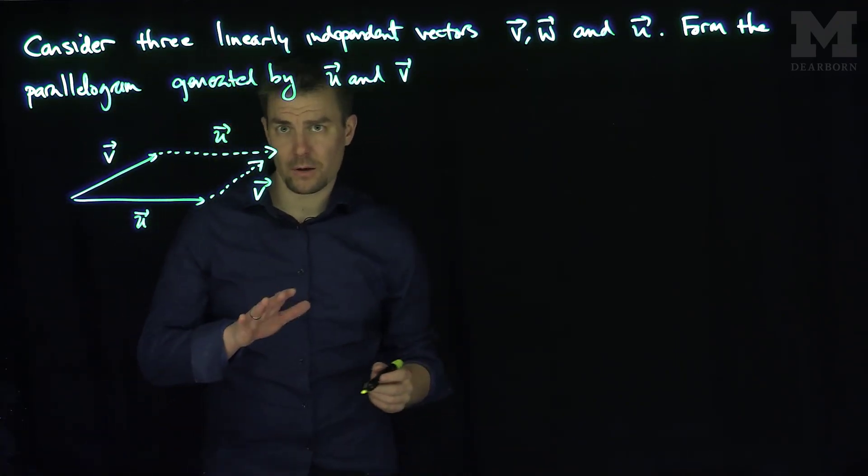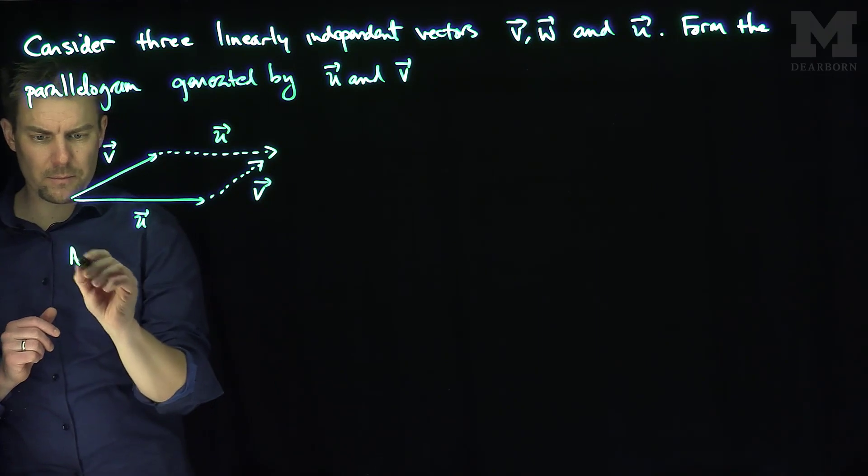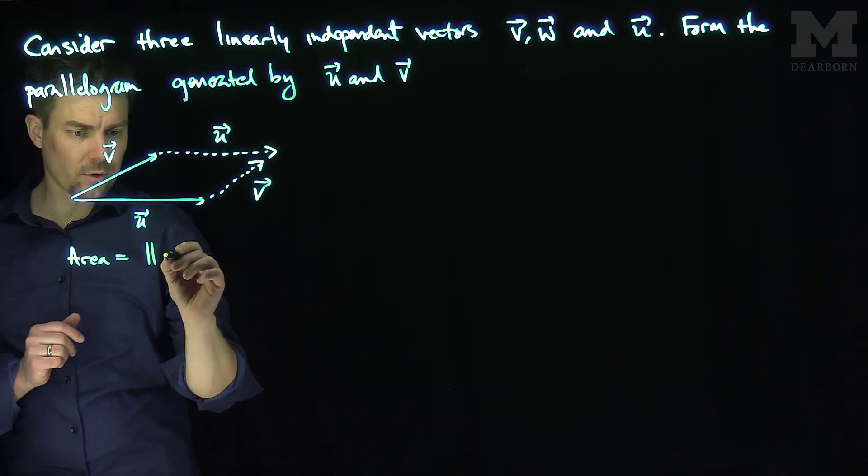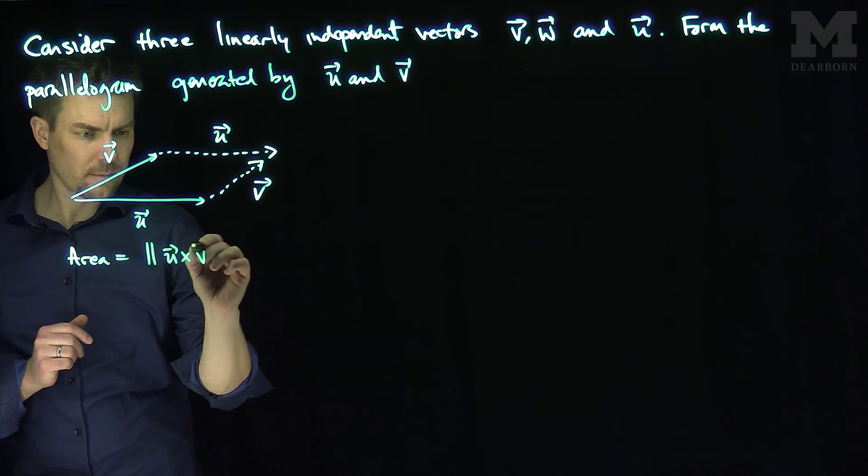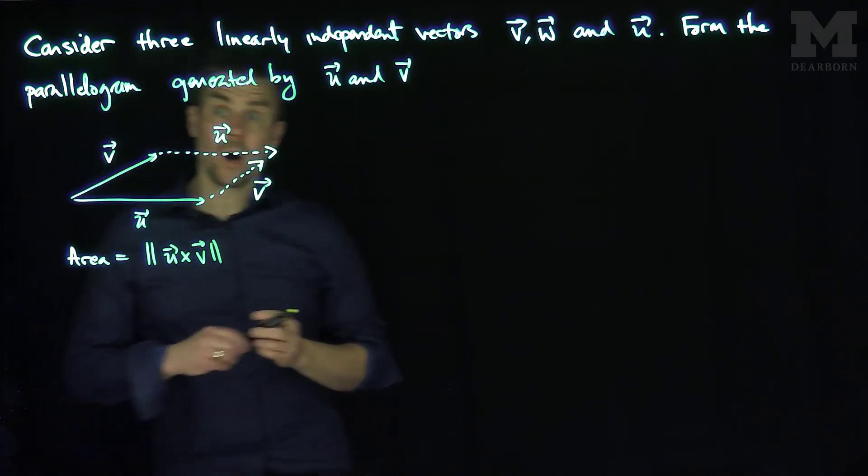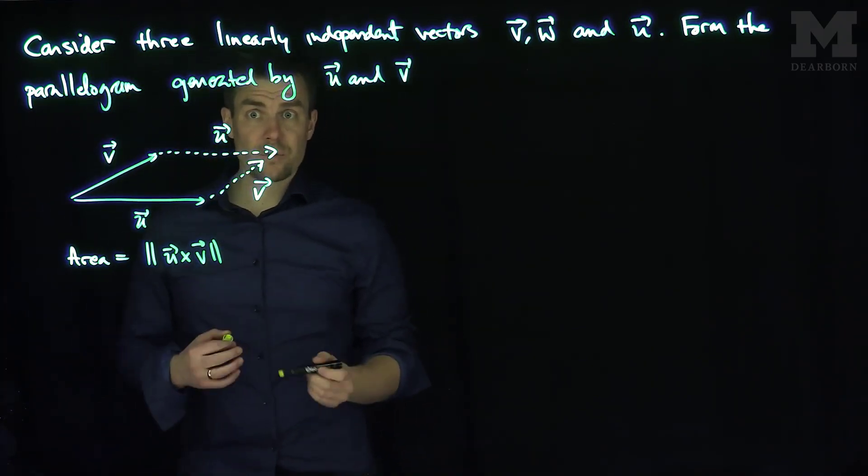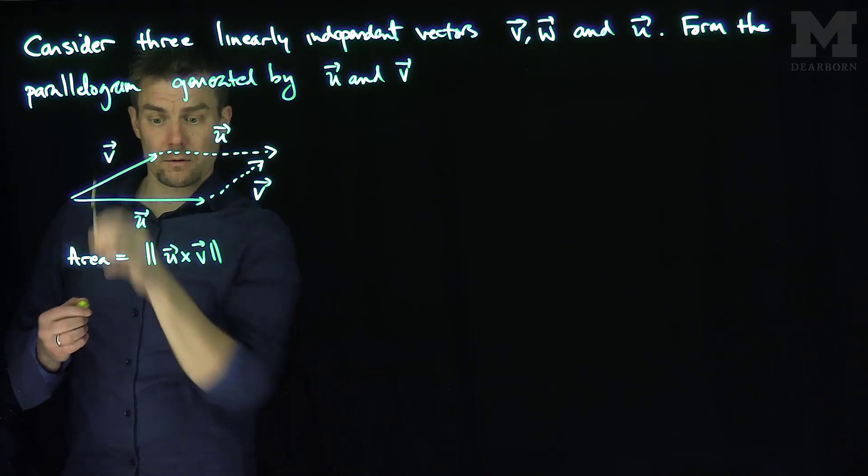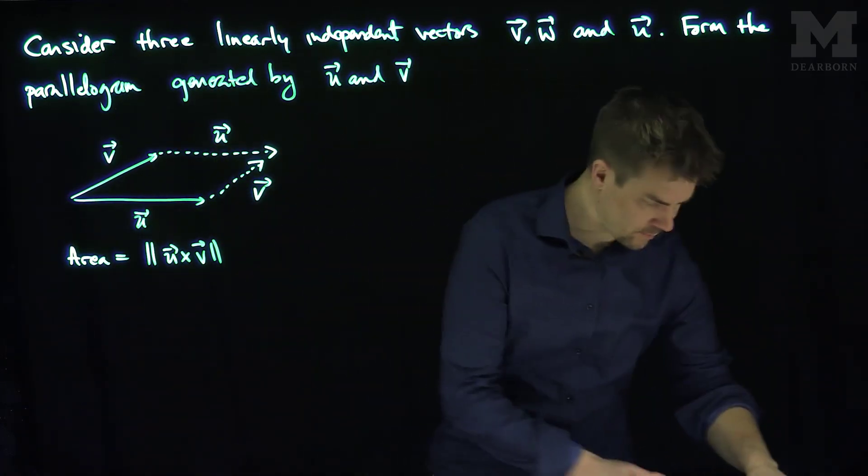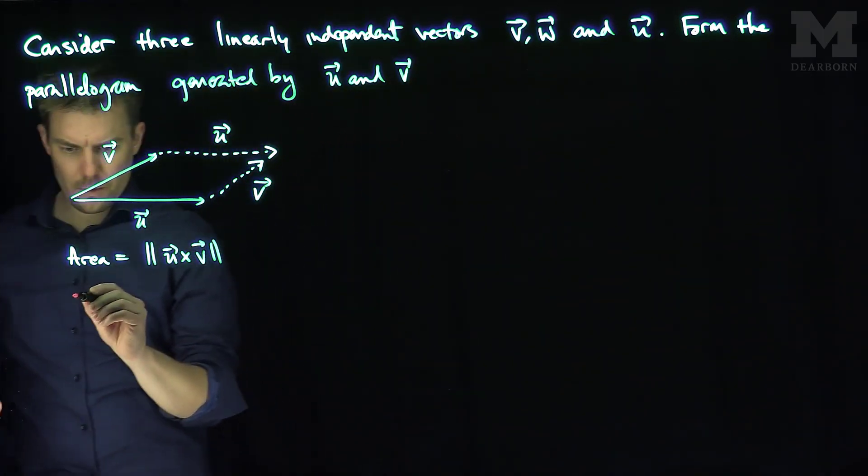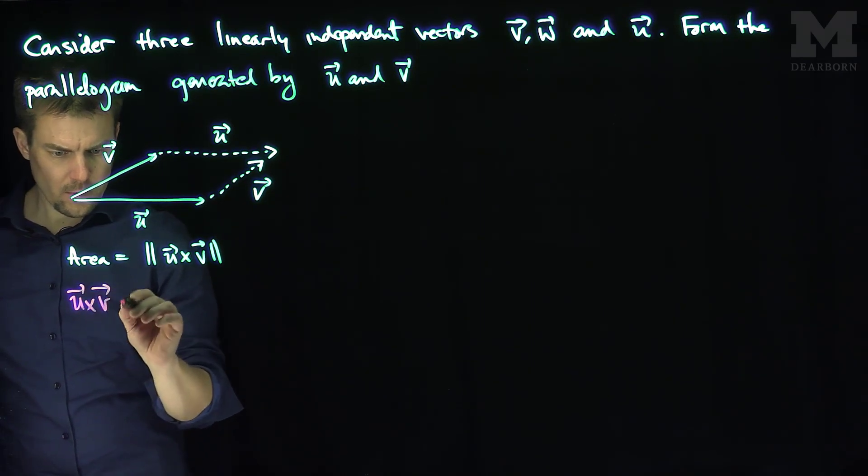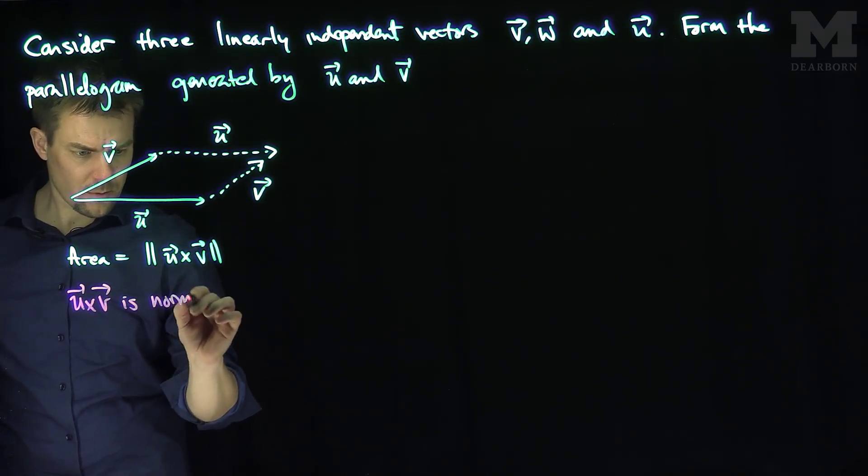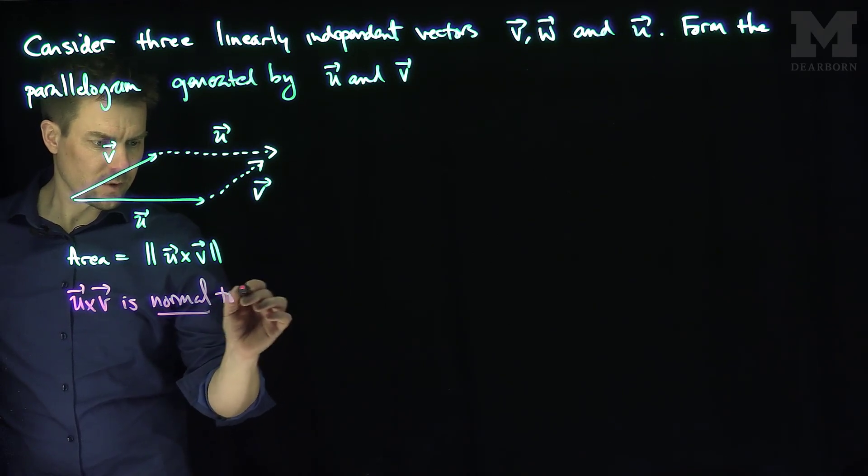We know what the area of this parallelogram is. The area is just going to be the length of the cross product of u and v. Well, we can note now that the cross product of u and v is the normal vector to this parallelogram. So that is normal to this plane.